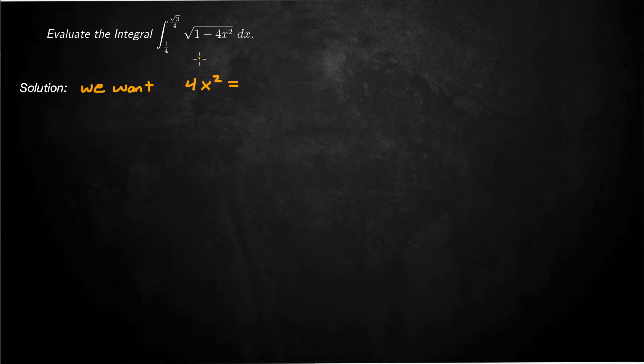We've got a radical that we can't do a u-substitution for. So what we want is for 4x² to become a trig function. The trig identity we want to use — since we have a number minus a variable squared — is to turn it into 1 minus sine squared. So we want 4x² to become sin²θ. That way 1 minus sin²θ becomes cosineθ.